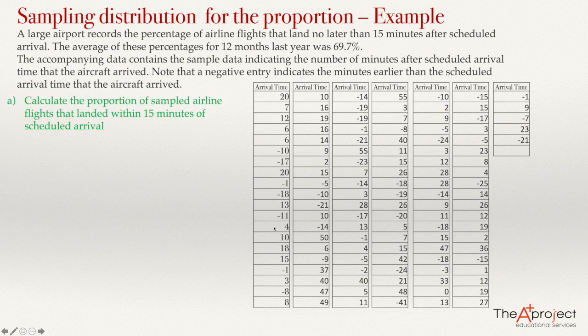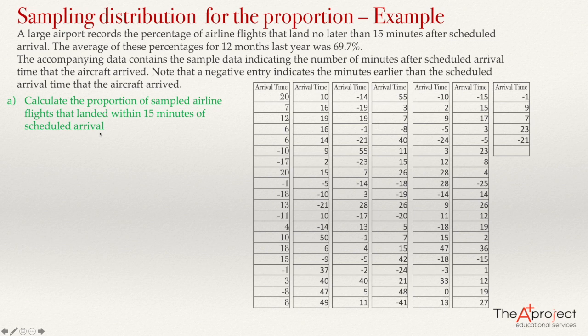The first question is: calculate the proportion of sampled airline flights that landed within 15 minutes of a scheduled arrival. When they say within 15 minutes, it could be earlier or later — so 15 minutes before or 15 minutes after the scheduled arrival.